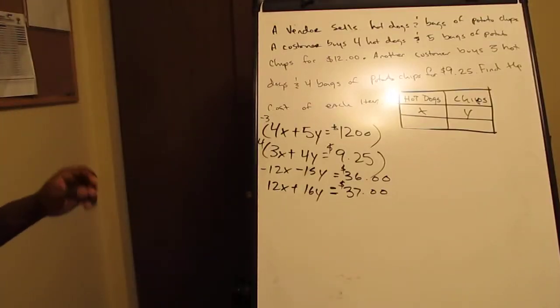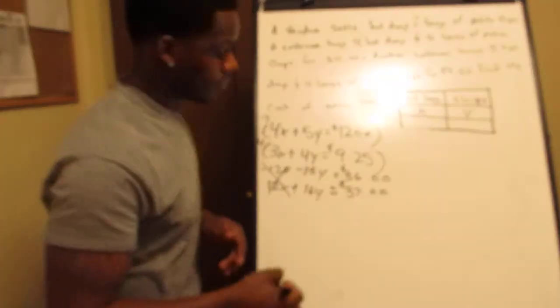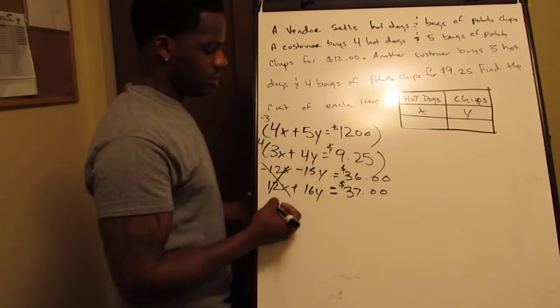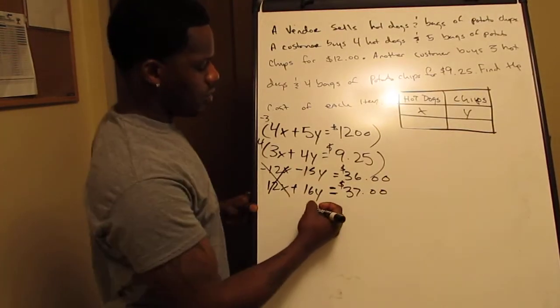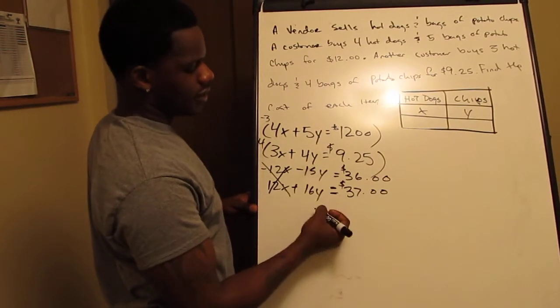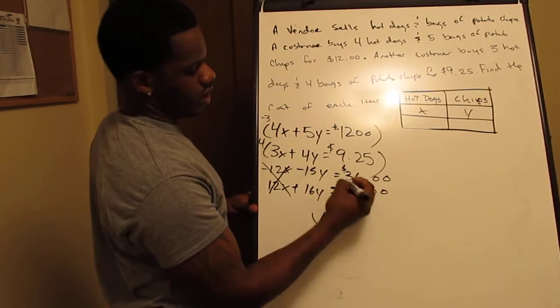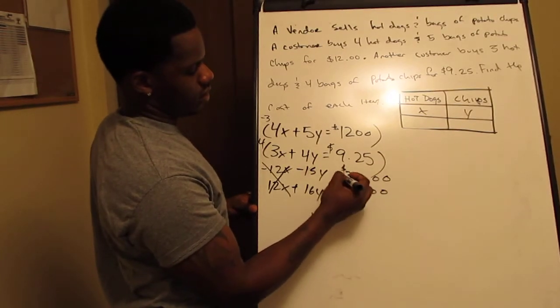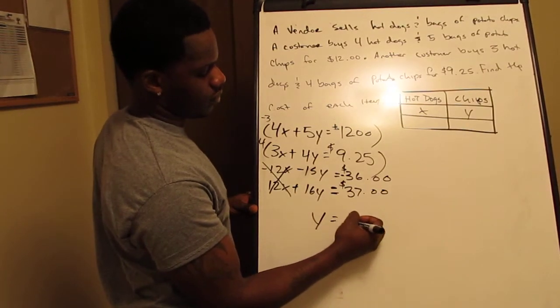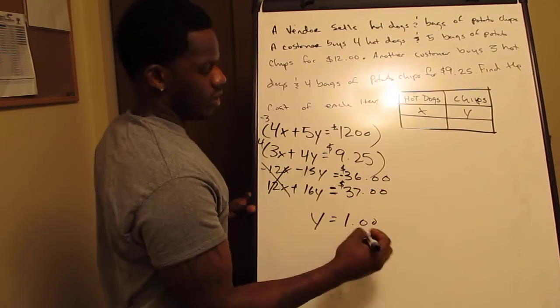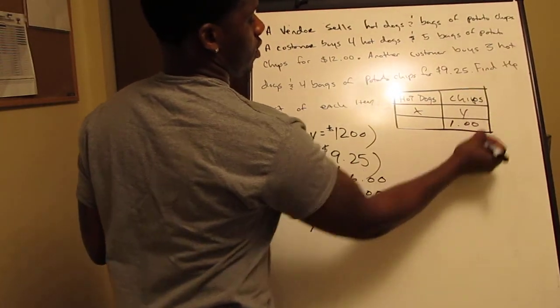Now we add the two equations. Negative 12X and 12X cancel out — we've neutralized X. That's why we used negative three. We're left with negative 15Y plus 16Y equals Y, and negative $36 plus $37 equals $1. So Y equals $1 — potato chips cost $1.